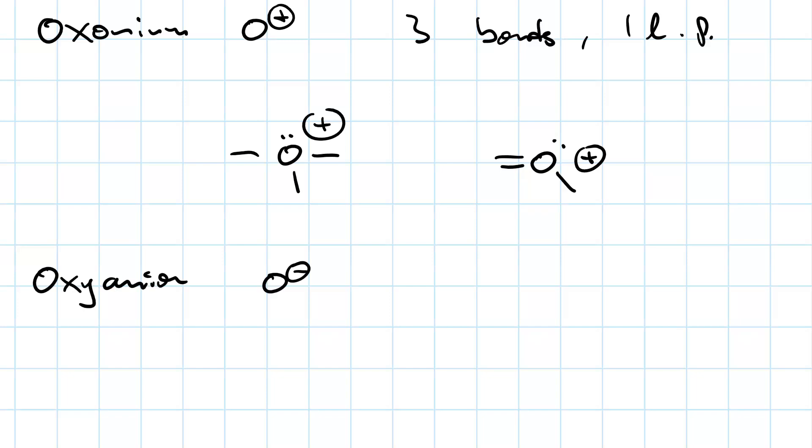An oxyanion is an O with a negative charge. That means it's going to have one bond and three lone pairs, like so.